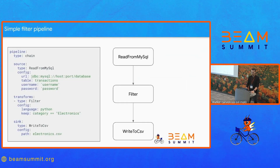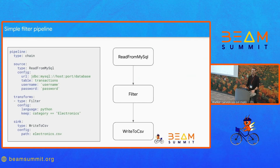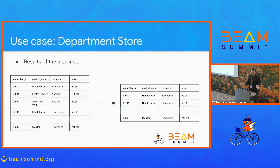Translating that to actual YAML syntax: we have a read from MySQL, with the configuration being my connection details — the URL, my table, my login credentials. From there, I'm passing it into a filter transform. Filter and a lot of our other mapping transforms support multiple languages; here I went with Python to keep it simple, filtering based on whether my category is electronics. And then finally I write out to my sink — in this case, CSV — defining my path as electronics.csv. Running this, I should only see electronics rows in the output table, which is confirmed.